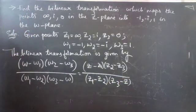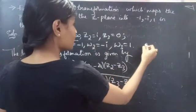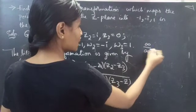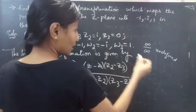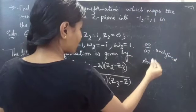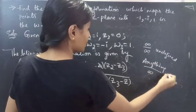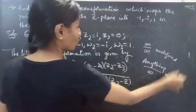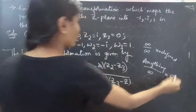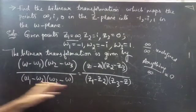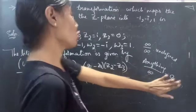Here we are having z1 equals to infinity. We know that infinity by infinity is undefined. However, anything except infinity divided by infinity equals to 0 — not 1.